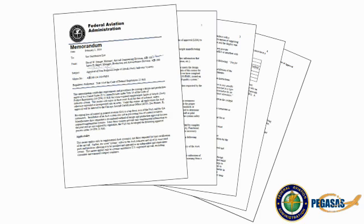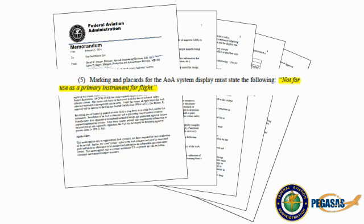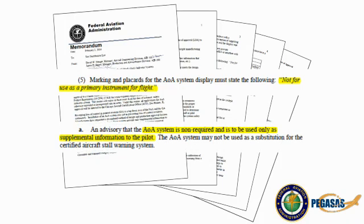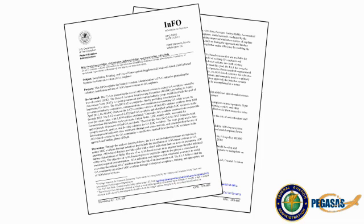The FAA has disseminated a press release indicating that they are streamlining the process for approval of angle of attack equipment in various aircraft. Within the press release design requirements, the FAA has mandated that a placard be placed indicating that the AOA system is not for use as a primary instrument for flight. Within the operational limitations section, they have stated that an AOA system is non-required and is to be used only as supplemental information to the pilot. Additionally, the FAA has released an Information for Operators, or INFO, numbered 14010, dated July 25, 2014, which addresses the installation, training, and use of non-required supplemental angle of attack based systems for general aviation airplanes.